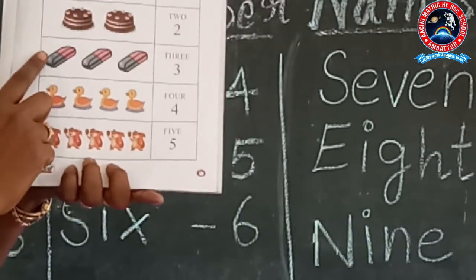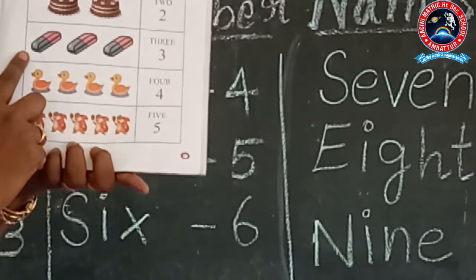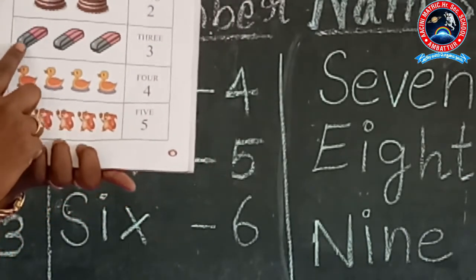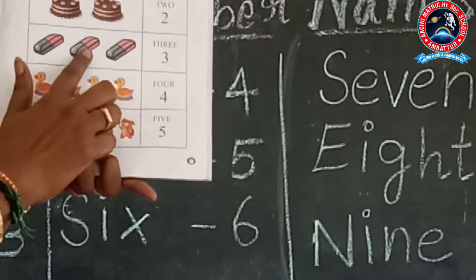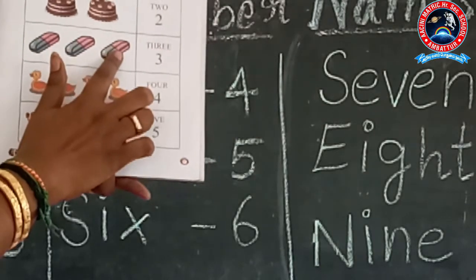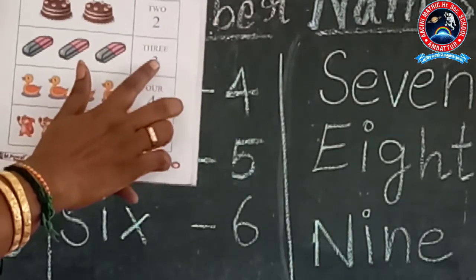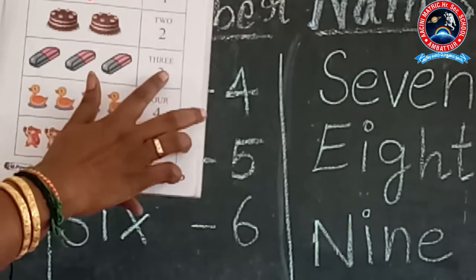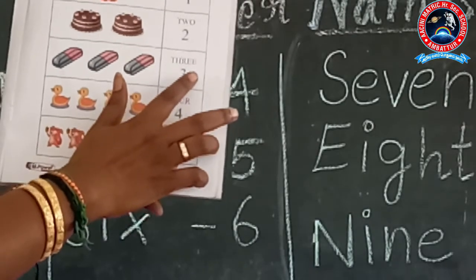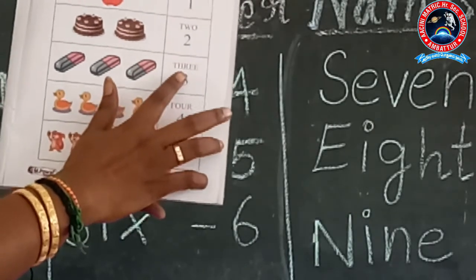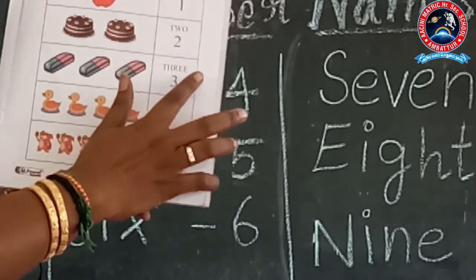Now how many erasers are there? Look at the picture — 1, 2, 3. T-H-R-E-E, 3. Repeat with me: T-H-R-E-E, 3.